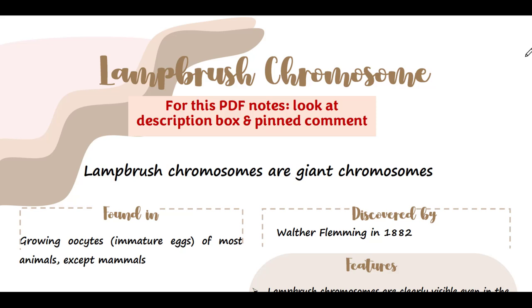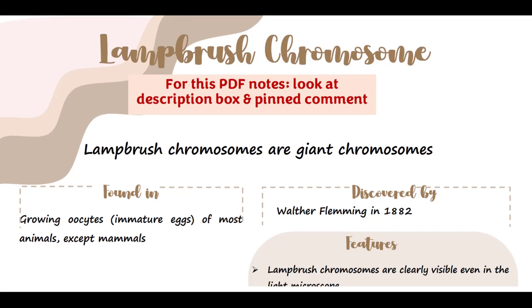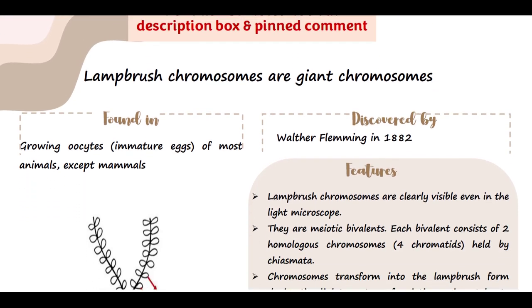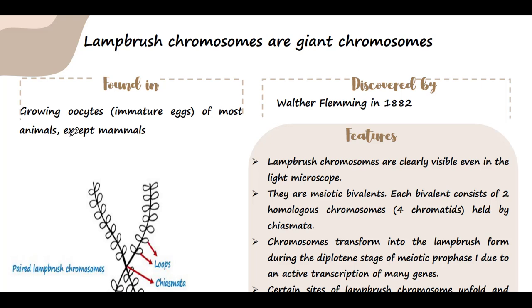Lampbrush Chromosomes are actually giant chromosomes. You will find Lampbrush Chromosomes in the growing oocytes — that means the immature eggs — of most animals except mammals. So you will not see Lampbrush Chromosomes in mammalian oocytes.